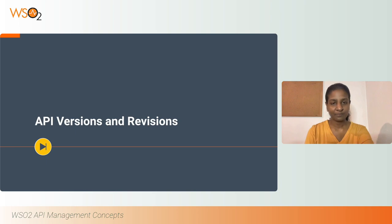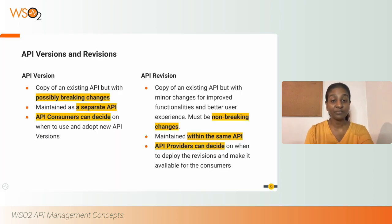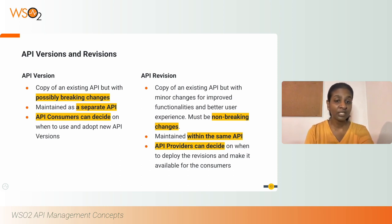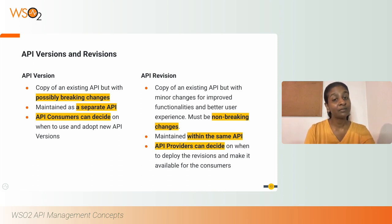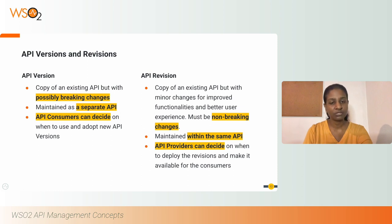API Versions and Revisions: There are two concepts — API Versions and API Revisions — in WSO2 API Manager. An API version is a copy of an existing API but with possibly breaking changes. A breaking change means the already existing applications using this API will not be able to use it as before, forcing them to change their application code. For example, if the response structure of the /employees resource changes, the processing logic of consuming applications must be updated — otherwise the applications might break.